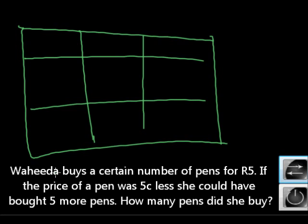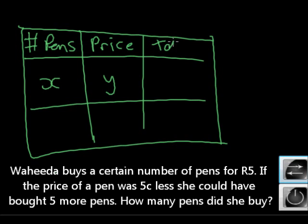So we have price. We've got number of pens and we have price per pen. So the number of pens originally was x and the price per pen was y. But what did she pay in total for them? 5 Rand.